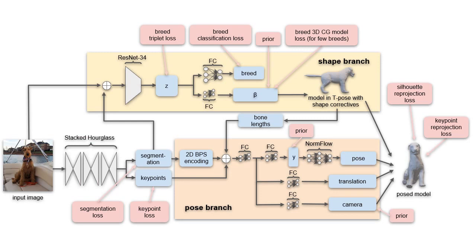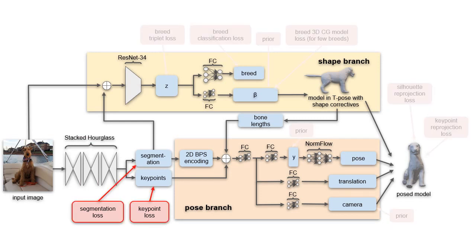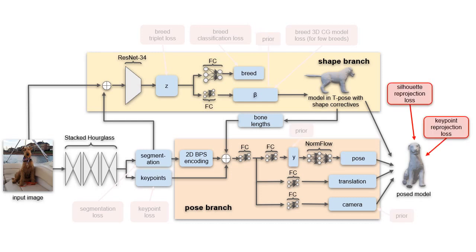Training is guided by a set of losses. Some of these losses encourage consistency with the available 2D annotations. Some of them are weak 3D priors that help the network cope with missing or ambiguous evidence. And some of them ensure consistency between the reprojection of our 3D prediction and the image evidence.